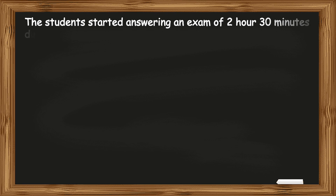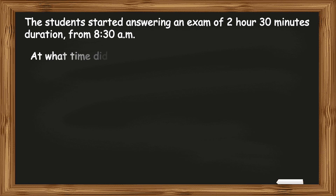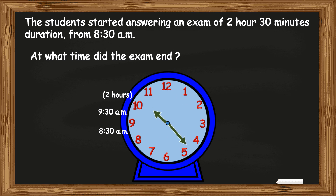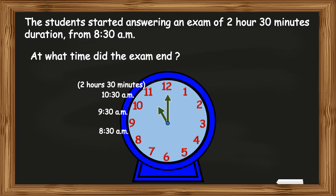One more example before we end. The students started answering an exam of 2 hours 30 minutes duration from 8:30 a.m. At what time did the exam end? After 1 hour the time was 9:30 a.m. After 2 hours the time was 10:30 a.m. And after 30 minutes more — that is after 2 hours 30 minutes — the time was 11 a.m. So the exam ended at 11 a.m.